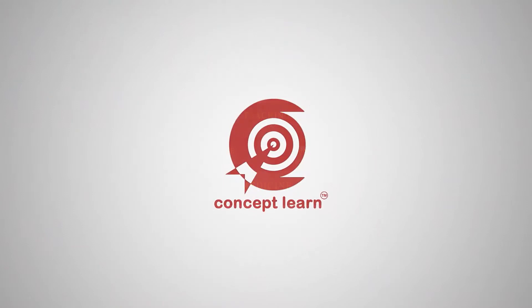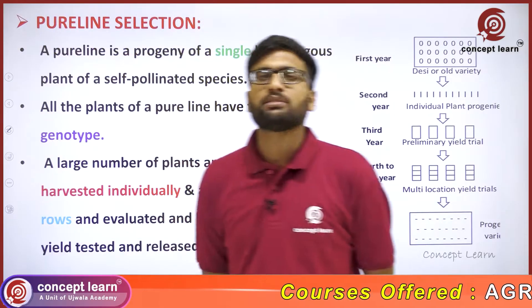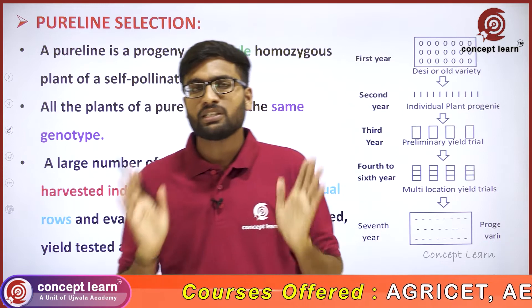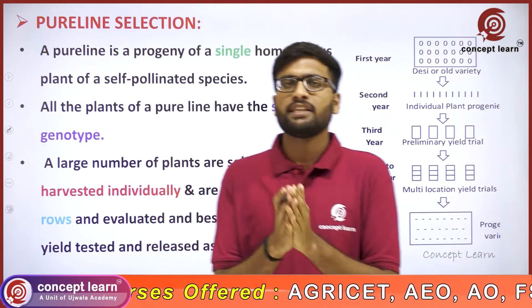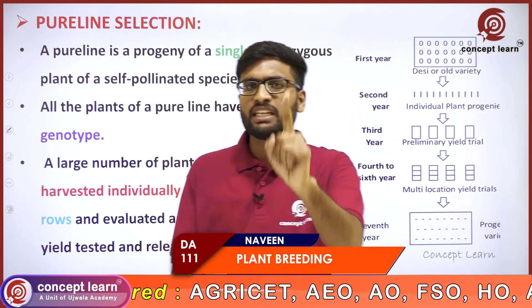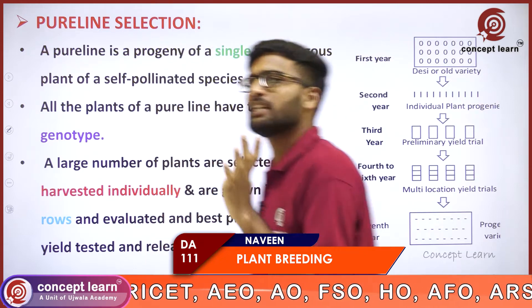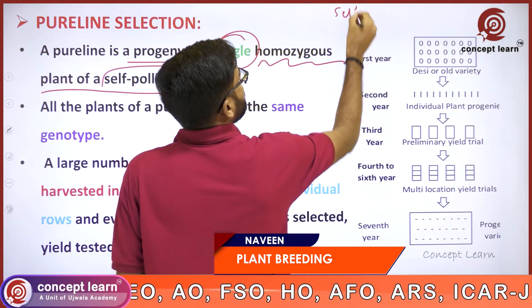Welcome to Concept Learn. Pure line selection. What is meant by pure line? Pure line is a progeny of a single homozygous self-pollinated plant, found in self-pollinated species.